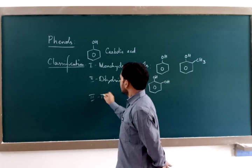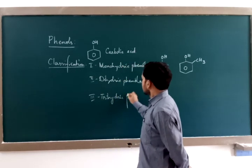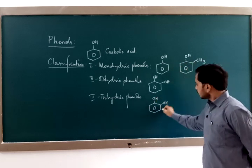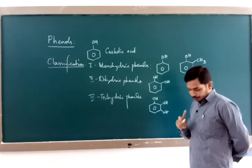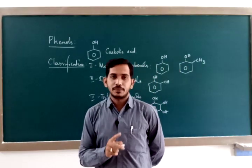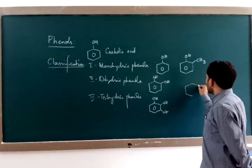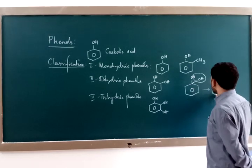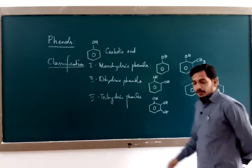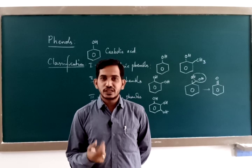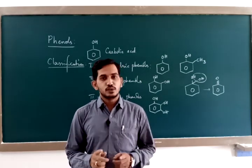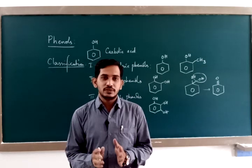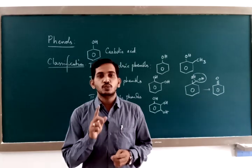The third type is trihydric phenols. Trihydric phenols are those which contain three hydroxyl groups attached to the benzene ring. The three hydroxyl groups could be attached to any of the carbons, but make sure that two hydroxyl groups are never attached to the same carbon. If two hydroxyl groups are attached to the same carbon, they will undergo dehydration and the compound will become a ketone. The two hydroxyl groups can be attached to adjacent carbon atoms or carbon atoms with gaps in between, but never to one carbon atom.